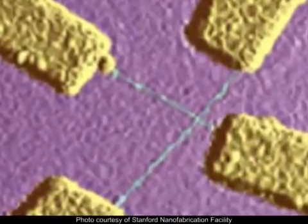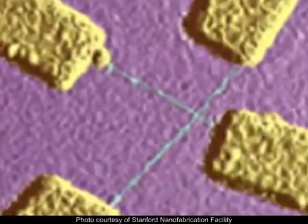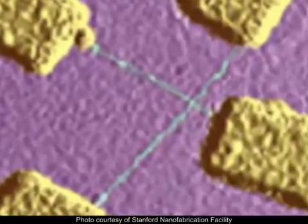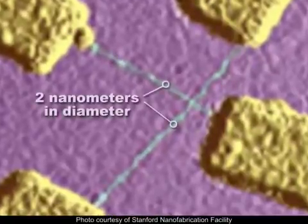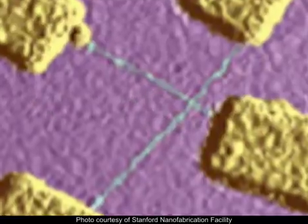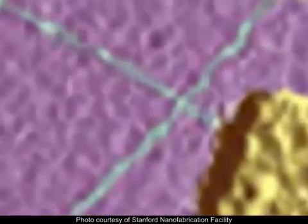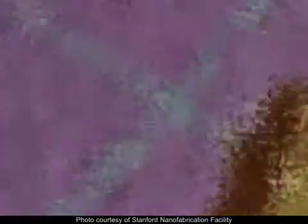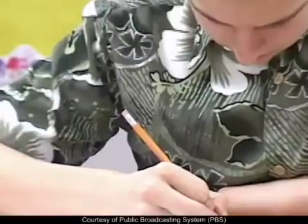The blue lines that you see in the image are carbon nanotubes in a transistor. These tubes are about 2 nanometers in diameter. How do we produce carbon tubes this small? We can take advantage of carbon's unique bonding in its graphite form.